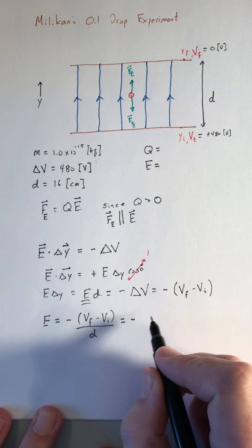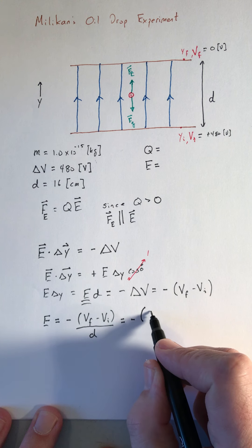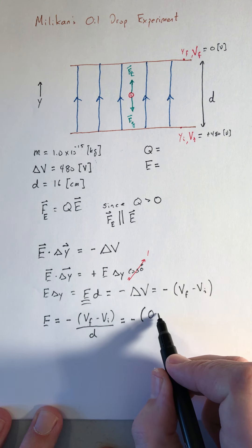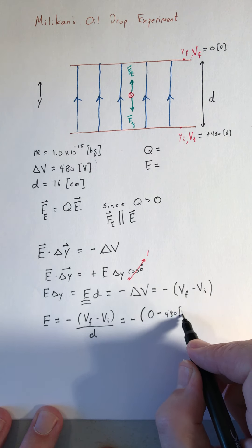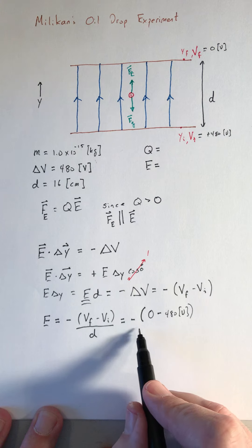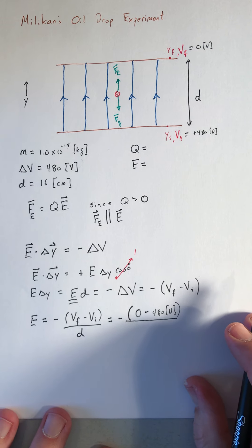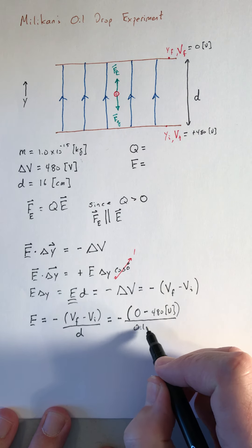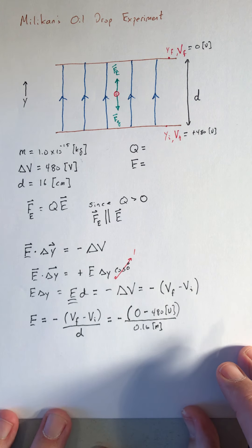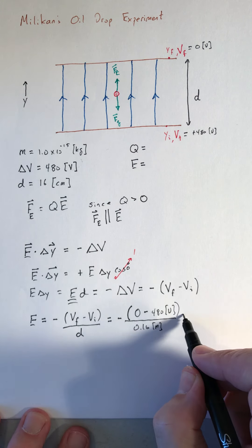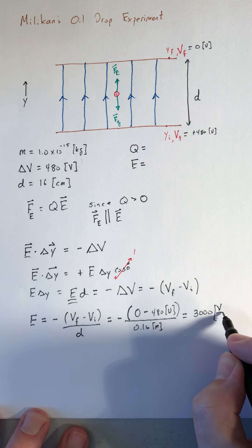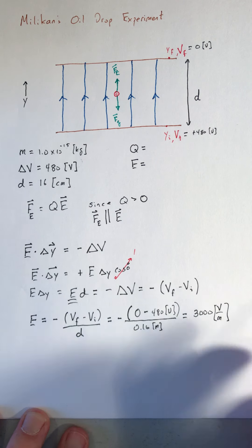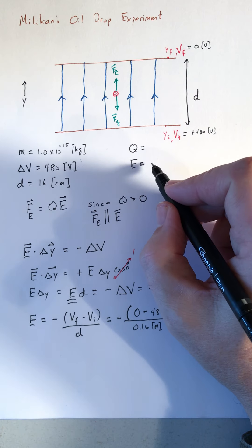So I'm going to have minus zero volts for V final minus 480 volts for the initial. And it's over 16 centimeters. So it's 0.16 meters. And that works out to be an electric field of a nice round number, 3000 volts per meter. So we've got this part figured out.